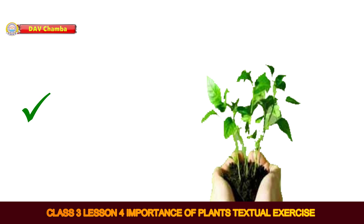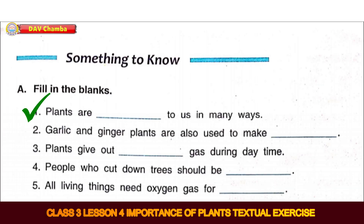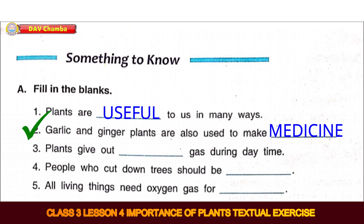First: Plants are dash to us in many ways. The answer is Useful. Second: Garlic and Ginger plants are also used to make dash. The answer is Medicine. Third: Plants give out dash gas during daytime. The answer is Oxygen.